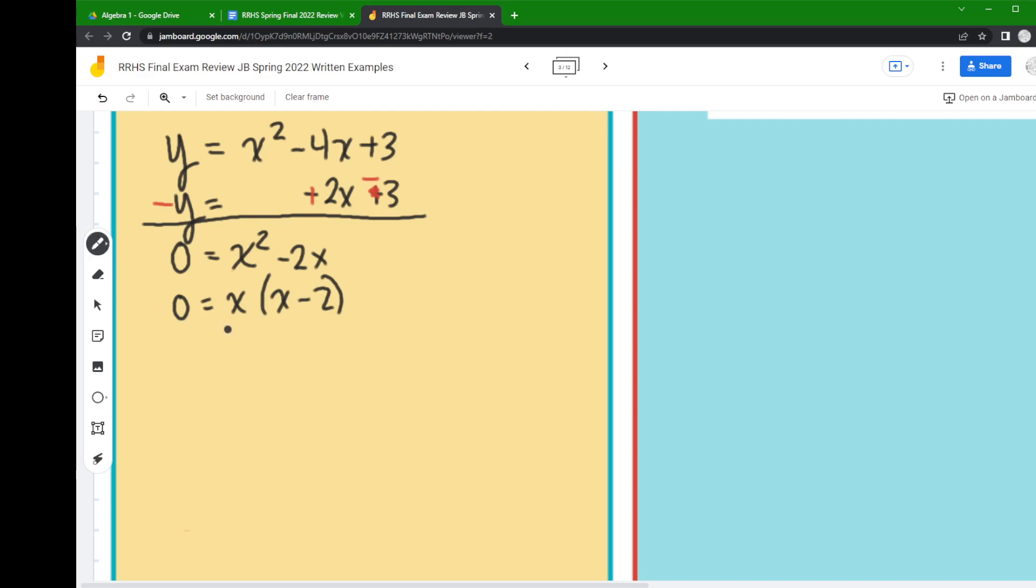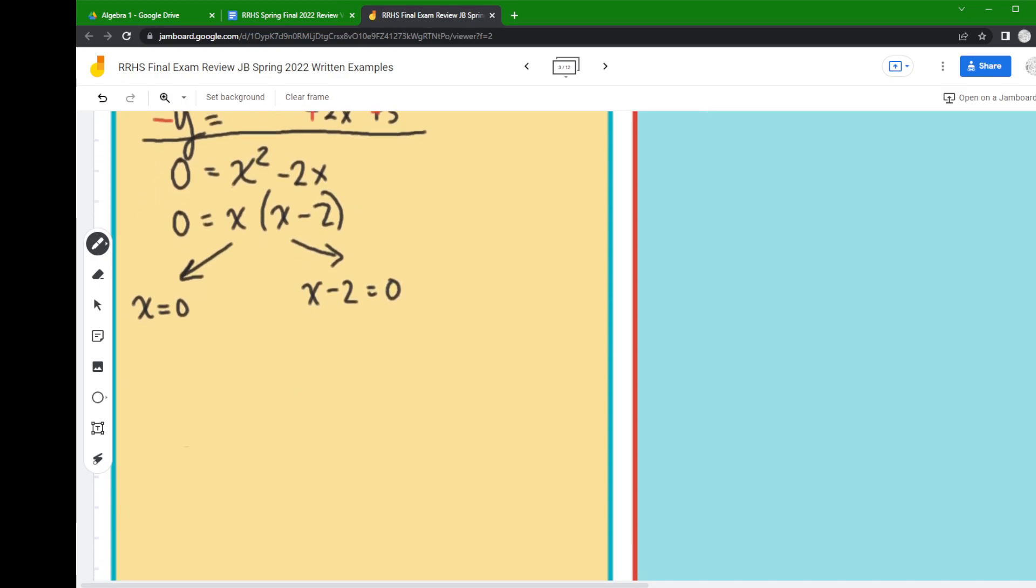The next step you use your zero product property. So you take this stuff that is multiplied together and you set it equal to 0. So here I'm going to say x equals 0, and here I'm going to say x minus 2 equals 0, and you just solve these little mini equations.